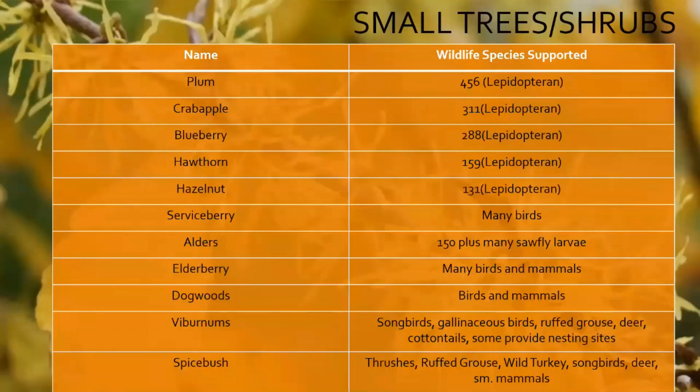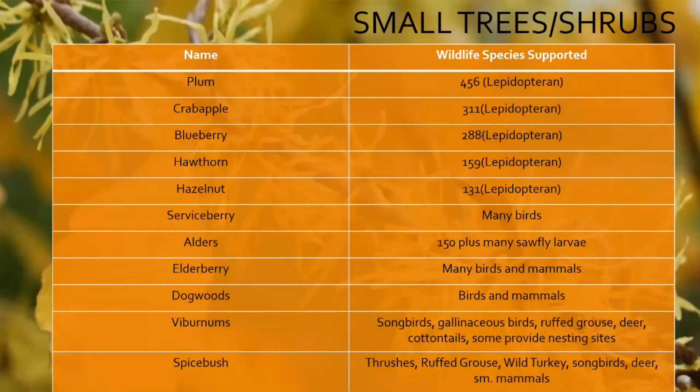Just a few more to whet your whistle: native plums support about 456 different moth and butterfly species across North America. Our native blueberries support 288 different moth and butterfly species. And spicebush — another one many people don't want in their woods — is native and part of a living landscape. It supports spicebush swallowtail larvae, thrushes, ruffed grouse, wild turkey, songbirds, deer, small mammals, and so on.